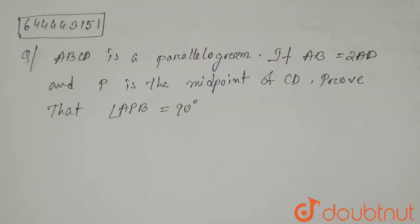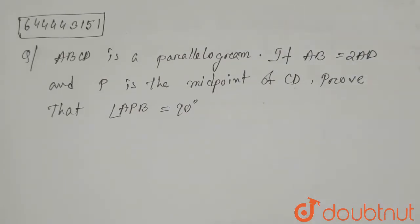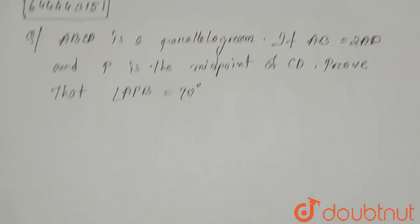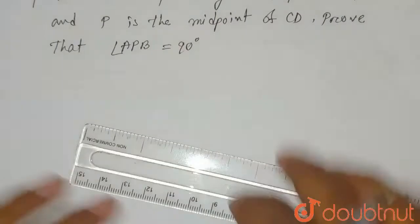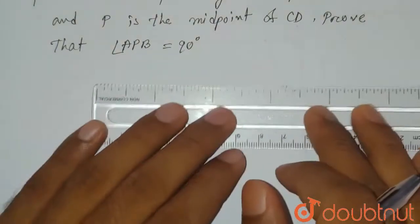Hello everyone. The question is: ABCD is a parallelogram. If AB equals 2AD and P is the midpoint of CD, prove that angle APB equals 90 degrees. First of all, we have to draw the diagram.